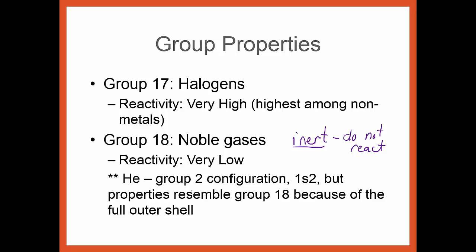Group 18s. Reactivity, very, very, very low. Most of the time we say they're inert. Inert means they do not react. Vocab word I would know. Helium really has a 1s2 configuration, but its properties are much more like noble gases. They are a gas and they are a noble gas, yes, they do not react. It's because they have the full configuration, the full orbital. That's what gives them the similar properties. So even though they have a group 2 configuration, they're in group 18 because their properties are more like the properties of group 18.